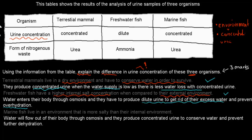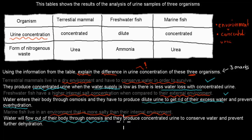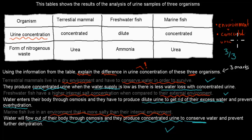For marine fish: their external environment is more salty than their internal environment — the opposite of freshwater fish. Because of osmosis, water flows from low concentration inside their body to the high concentration outside, causing dehydration. So they produce concentrated urine to conserve water and prevent further dehydration. Explaining the environment they live in and relating it to the urine concentration they produce earns you the third mark, giving three marks out of three.